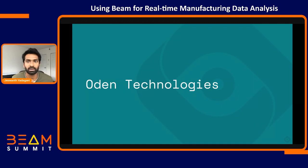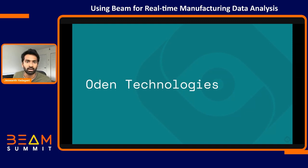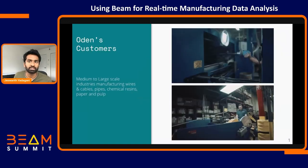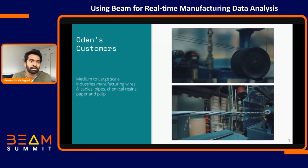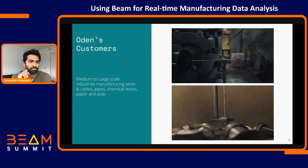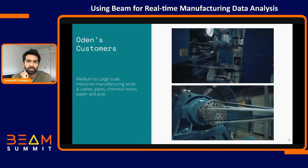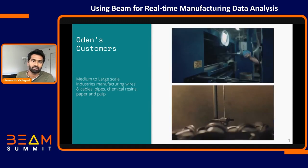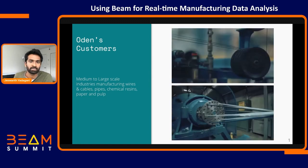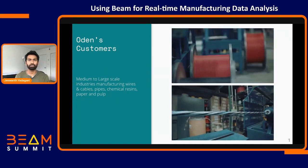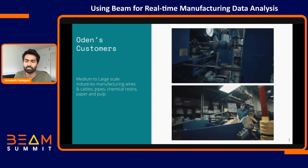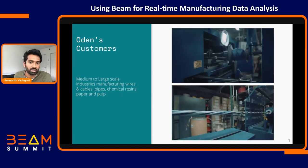A bit about Odin: we're a young, six-year-old startup in the industrial automation domain. We provide analytics to manufacturers that can improve their processes, reduce waste, or optimize performance. Our customers are medium to large-scale industries — wire manufacturers, pipe manufacturers, chemical resin industries, paper and pulp industries. Essentially, any industry with a continuous manufacturing process is compatible with our platform and can be a potential customer.